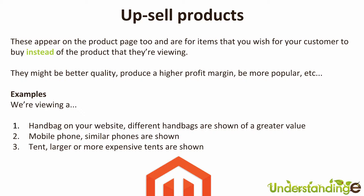Similar products but more expensive — that's probably the best rule of thumb. A tent is a great example: if someone's looking at a two-man tent, show alternative two-man tents of higher value, or maybe a three or five-man tent instead. Does that make sense? Totally.